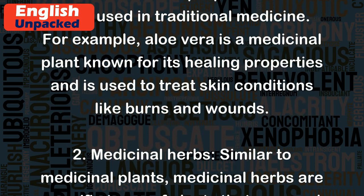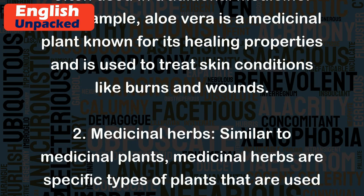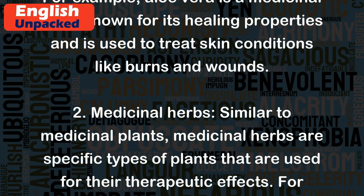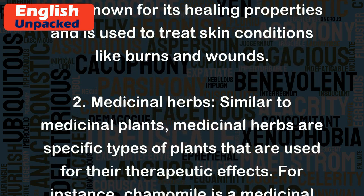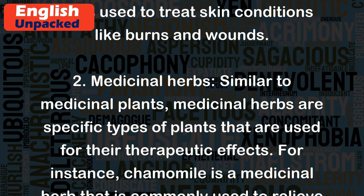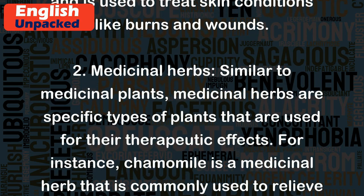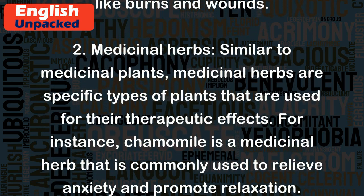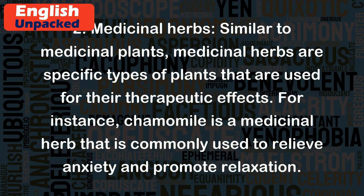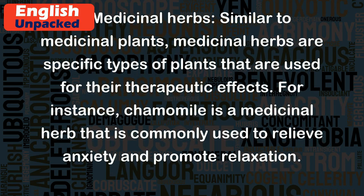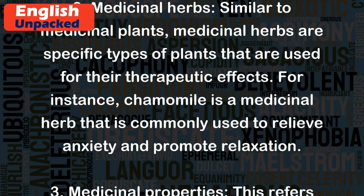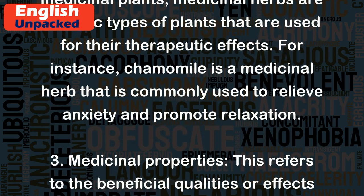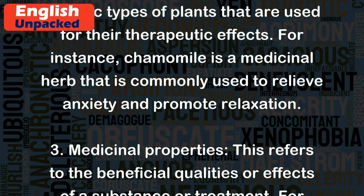Two: Medicinal herbs. Similar to medicinal plants, medicinal herbs are specific types of plants that are used for their therapeutic effects. For instance, chamomile is a medicinal herb that is commonly used to relieve anxiety and promote relaxation.